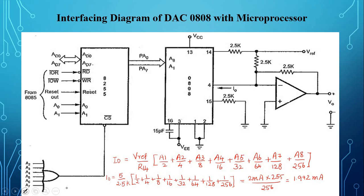This output current is converted into voltage using a current-to-voltage (I to V) converter. The output voltage for full-scale input is V_out = I_out × R = 1.992 milliamps × 2.5 kilohms = 4.988 volts.